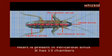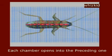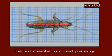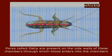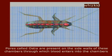The heart has 13 chambers. Each chamber opens into the preceding one. The last chamber is closed posteriorly. Ports called ostia are present on the side walls of these chambers, through which blood enters into the chambers.